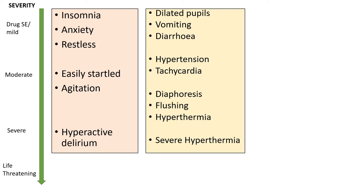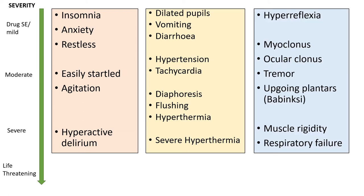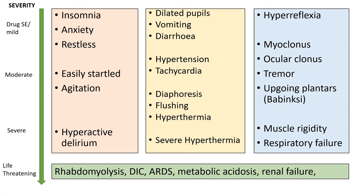Autonomic features also include sweating, flushing, and fever. Severe hyperthermia above 41°C is serious and needs to prompt action. On the neuromuscular side — especially important for differentials — side effects may just be brisk reflexes, but this can progress to myoclonus, ocular clonus, tremor, and up-going plantars. Further progression brings muscular rigidity leading to respiratory failure. In the most severe cases, you get life-threatening features: rhabdomyolysis, renal failure, DIC, ARDS, and eventually seizures, coma, and death.